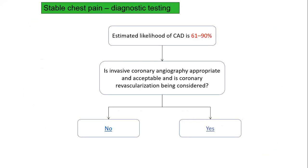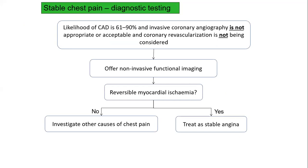If the pre-test probability is in the higher range — 61 to 90% — we decide if invasive coronary angiography is appropriate and acceptable, and whether coronary revascularization is being considered. Based on symptoms and response to non-invasive functional testing, we can proceed with invasive coronary angiography. If invasive coronary angiography is not appropriate despite high likelihood, then non-invasive functional imaging is the next step to see if there is reversible myocardial ischemia. If reversible ischemia is found, treat as stable angina; if not, investigate other causes.